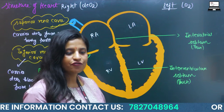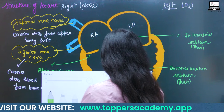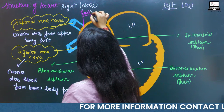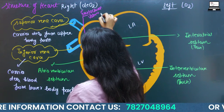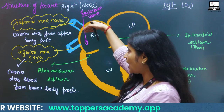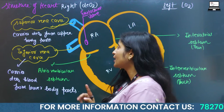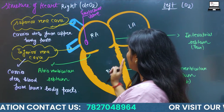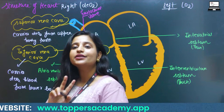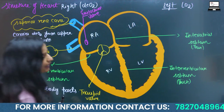Once blood is received from different locations of the body, it comes into the right atrium. Near the inferior vena cava, a valve is present called the Eustachian valve, which prevents the backflow of blood — since there is more chance of backflow from below. Blood then comes into the right atrium, and between the right atrium and right ventricle a valve is present called the tricuspid valve, which also prevents backflow.